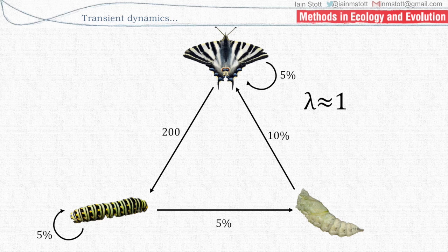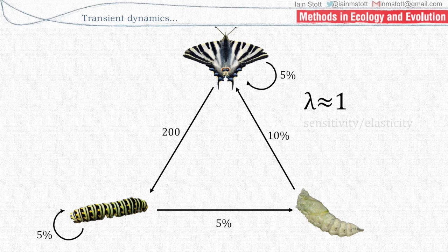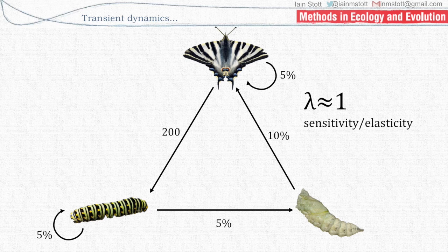So if we had a population of conservation concern, we do a sensitivity or elasticity analysis to find out which life cycle transitions we need to target to increase population growth rate. Conversely, if we have a pest we want to control, we look at which transition is best to decrease population growth rate. Today I'm talking about density-independent and time-invariant models, though analogies exist for stochastic and density-dependent models as well. Historically, these analyses focus on average long-term growth rates and equilibria.